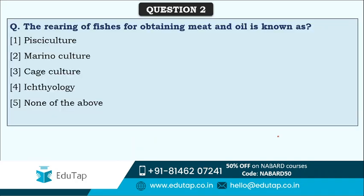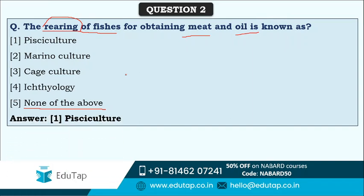Next question: the rearing of fishes for obtaining meat and oil is known as what? Options are Pisciculture, Mariniculture, Cage culture, Ichthyology, or none of the above. Please focus on the word 'rearing' - rearing of fishes for obtaining meat and oil. The correct answer is option one, that is Pisciculture. Pisciculture is the culture in which fishes are reared for obtaining meat and oil.